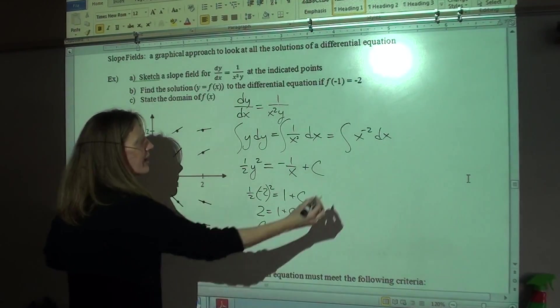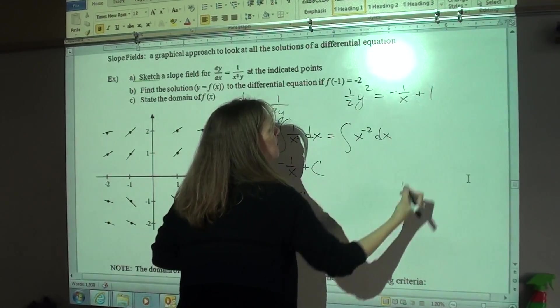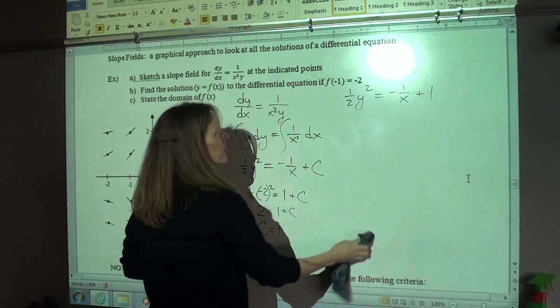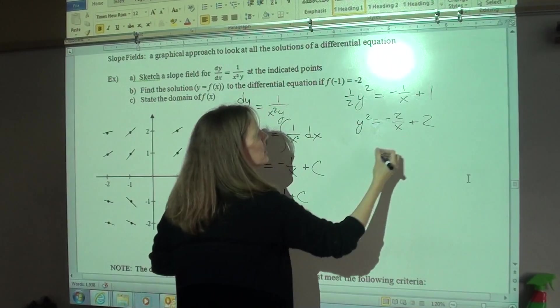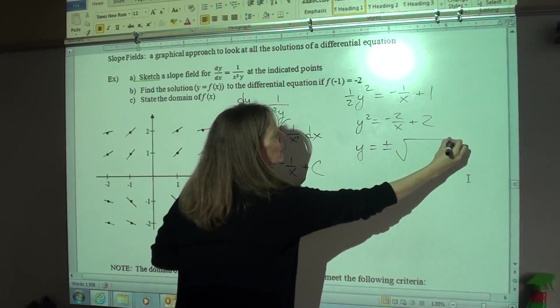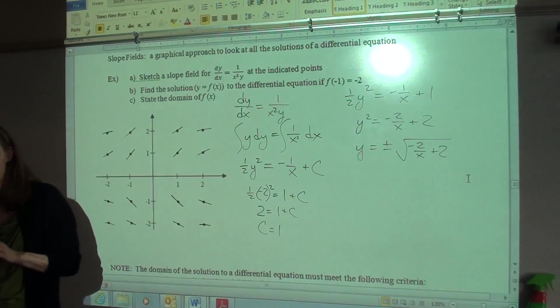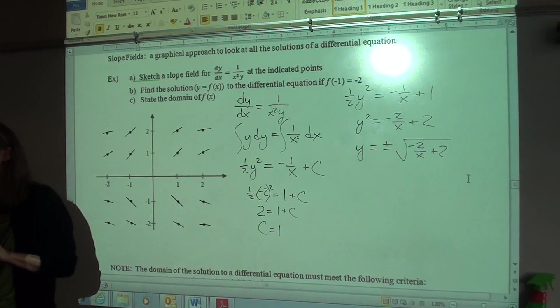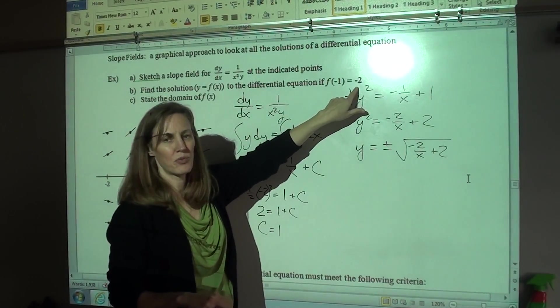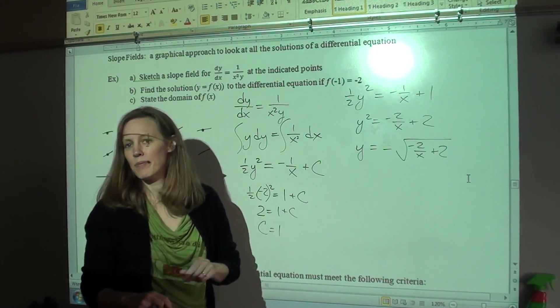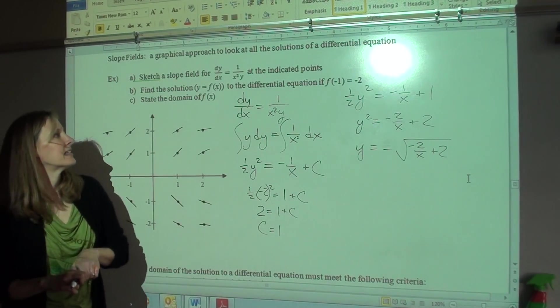So here's what we have. We have 1 half y squared equals negative 1 over x plus 1. And now we just double everything, so we get y squared is negative 2 over x plus 2. So y is plus or minus the square root of negative 2 over x plus 2. What do I have to change on this final answer? Plus or minus. Which one should I pick? Minus. Why the minus? Because it's negative 2. Because in order to plug in a negative 1 for x and get a negative 2 for y, there has to be a negative out front here. Does that make sense? Yes, ma'am. Good.